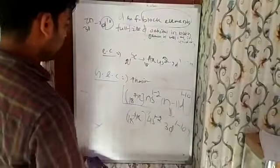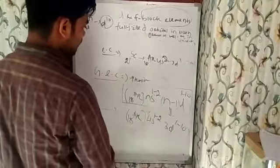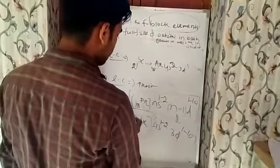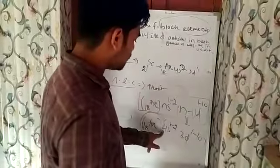And argon 18, this is the general electron configuration of D-block elements. Because when I take scandium, you would say argon 18, the next is 4S, either 1 to 2.